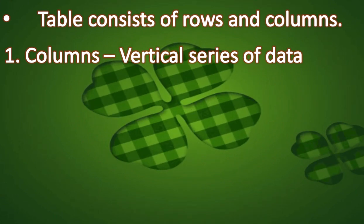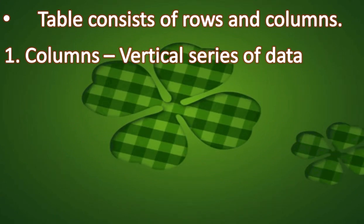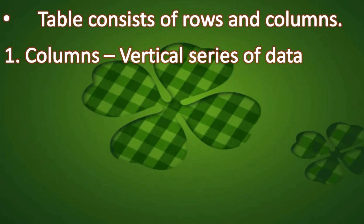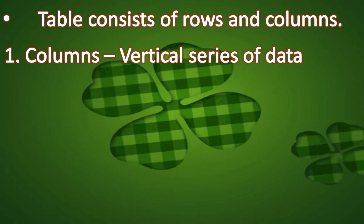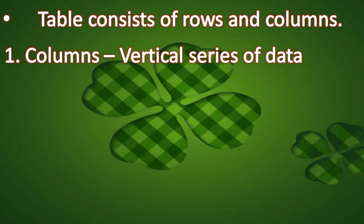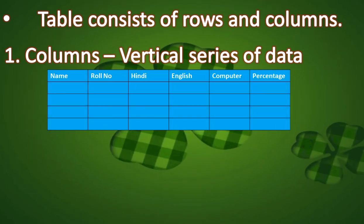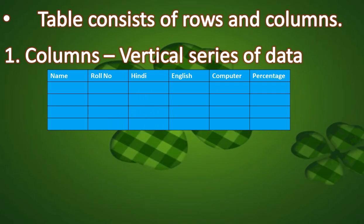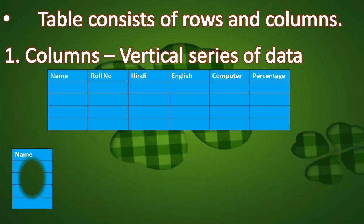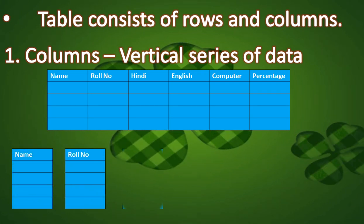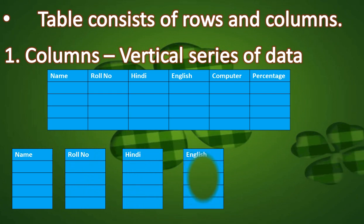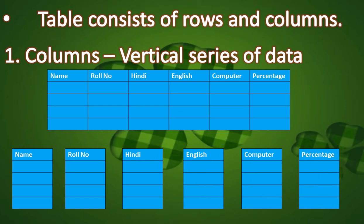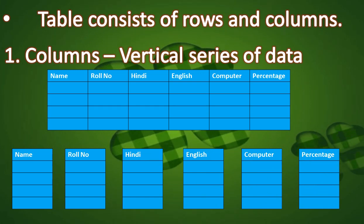A table consists of rows and columns. Columns mean a vertical series of data. In this table, I will show you the columns: name is the first column, roll number is the second, Hindi is third, English is fourth, computer is fifth, and percentage is sixth.